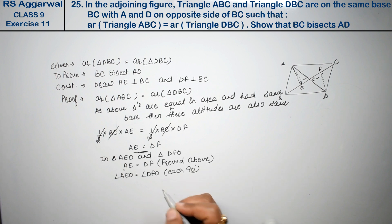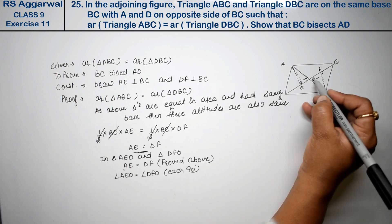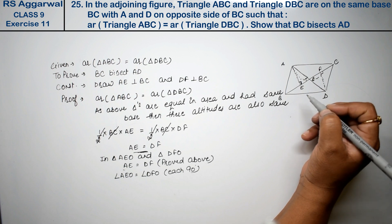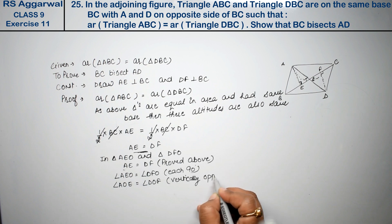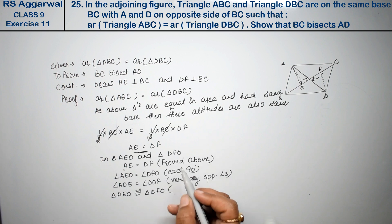And what can we say? Vertically opposite angles. So we can say angle AOE is equal to angle DOF, vertically opposite angles. So triangle AEO is congruent to triangle DFO. Three things are proved.